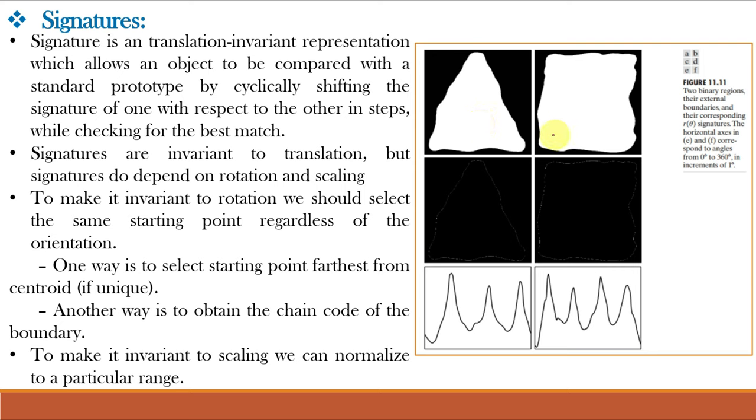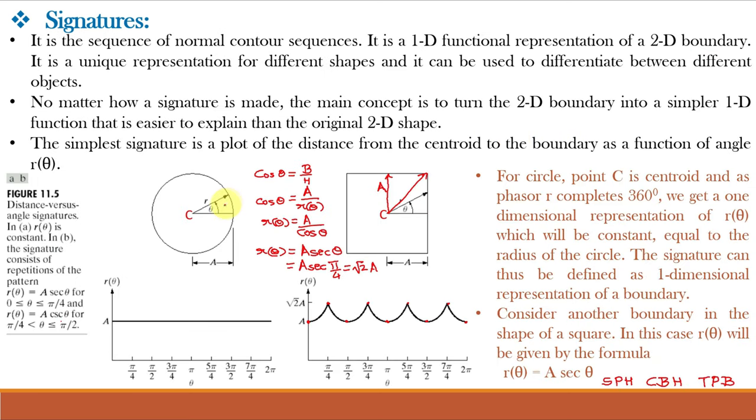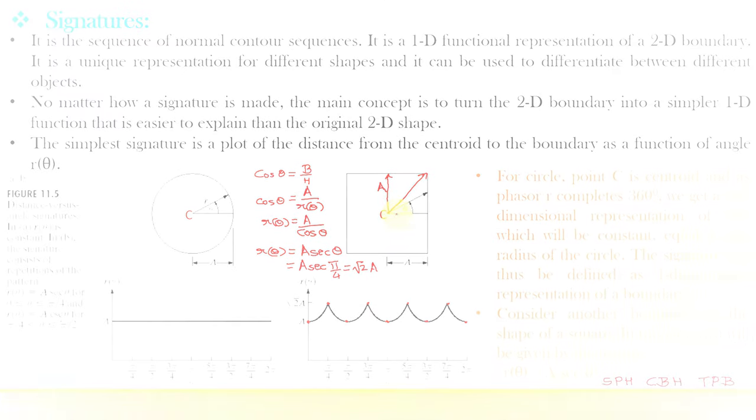These are two binary regions and these are their boundaries and corresponding to this boundary this is the R theta signature and corresponding to this boundary this is the R theta signature. And we can see that these signatures are unique but these are some complex objects for MATLAB implementation. Rather, let us implement the signature for the circle and square in MATLAB.